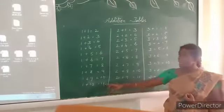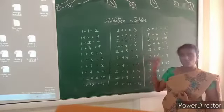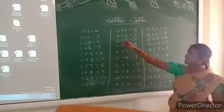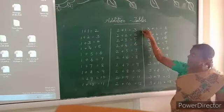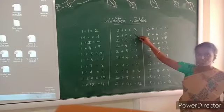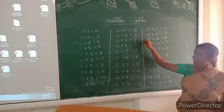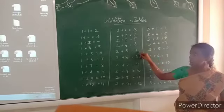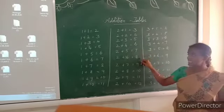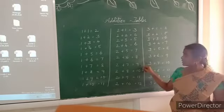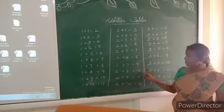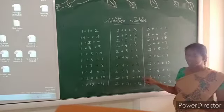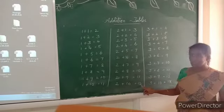Okay children, similarly you have to practice these addition tables. Shall we read one time? 2 plus 1 is equal to 3. 2 plus 2 is equal to 4. 2 plus 3 is equal to 5. 2 plus 4 is equal to 6. 2 plus 5 is equal to 7. 2 plus 6 is equal to 8. 2 plus 7 is equal to 9. 2 plus 8 is equal to 10. 2 plus 9 is equal to 11. 2 plus 10 is equal to 12.